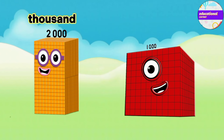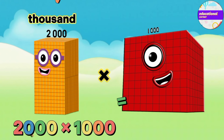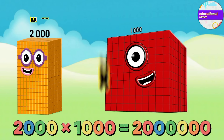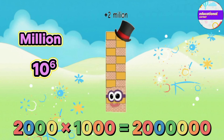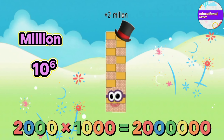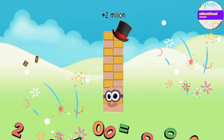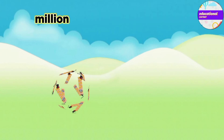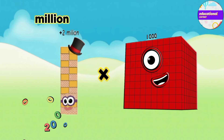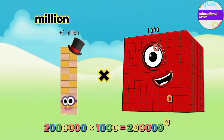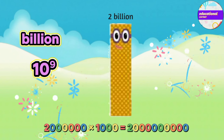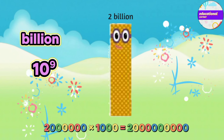2000 multiply by 1000 equals 2 million. 2 million multiply by 1000 equals 2 billion.